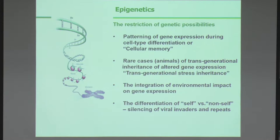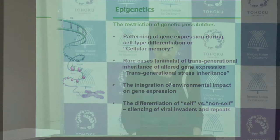In rare cases epigenetics also mediates transgenerational inheritance of altered gene expression, often in response to stress — this can be metabolic stress, and what has been best studied in animals is usually starvation or extreme cases of nutrition. In plants, transgenerational inheritance is very common. Epigenetics also integrates environmental impact on gene expression, and it differentiates self from non-self — the genes that are yours versus invading viral elements. In other words, epigenetics allows us to adapt to nutritional or environmental insult and to stabilize our genomes against invasion, mutation during aging, and cancer.